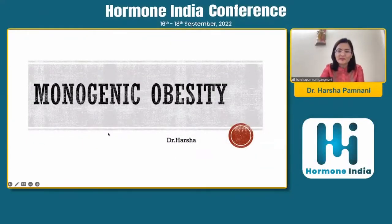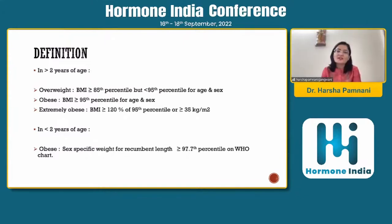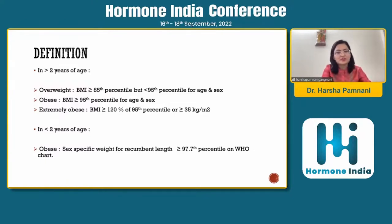The talk today is on monogenic obesity. A few basic definitions: in children more than 2 years of age, overweight is defined as BMI between the 85th and 95th percentile for age and sex per CDC growth charts. Obese is BMI above the 95th percentile, and extremely obese is BMI above 35 kg/m² or more than 120% of the 95th percentile. For children less than 2 years, obese is defined as sex-specific weight for recumbent length above the 97.7th percentile per the WHO growth chart.